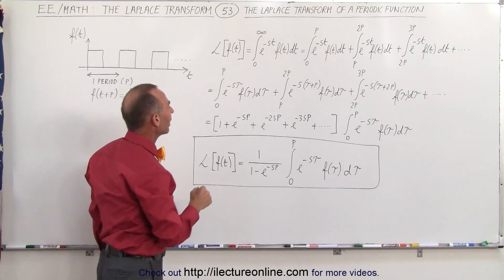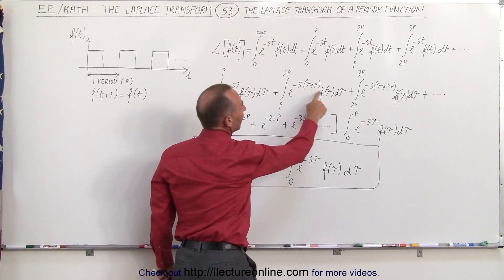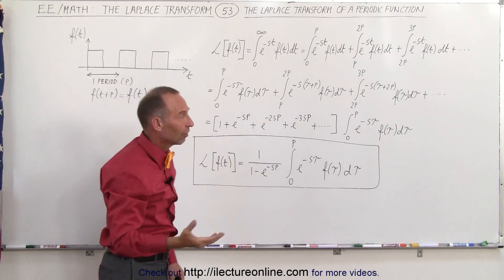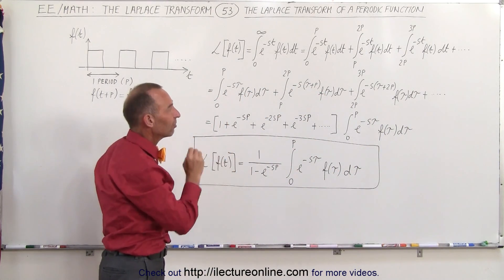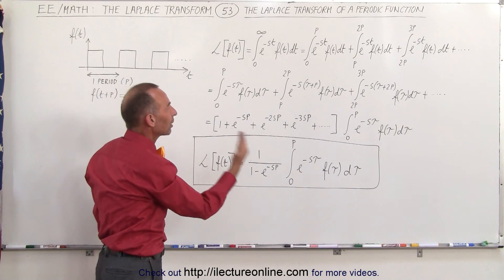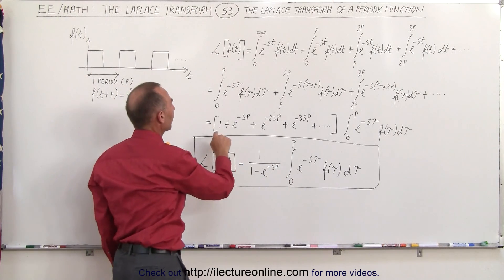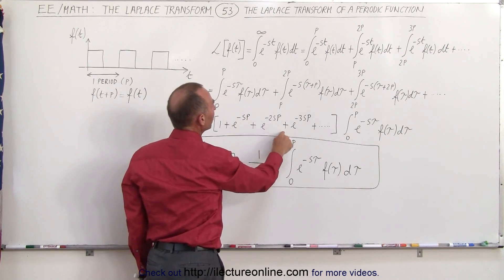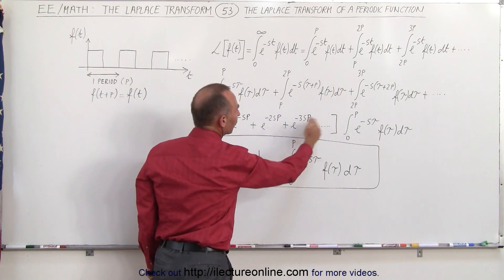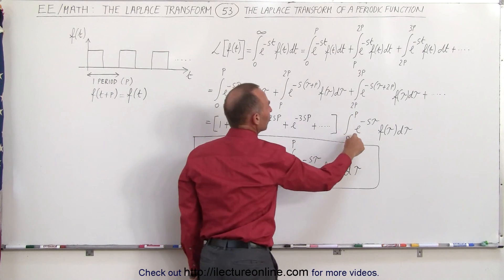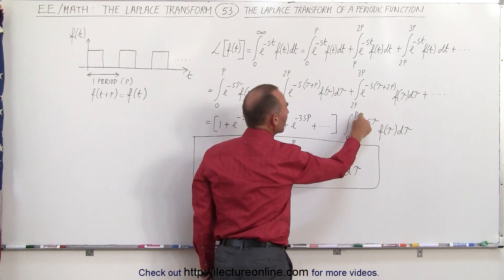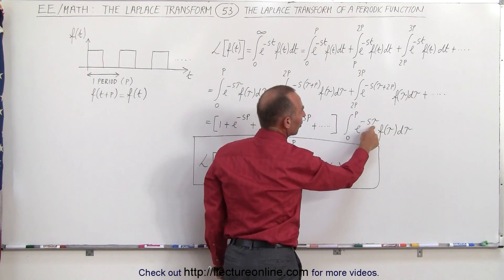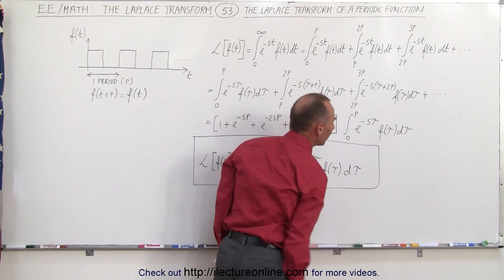And then you realize that s times p and s times 2p and so forth, that's basically a constant. The period is a constant, s is a constant, so we can factor those out, we can bring those out of the integral, and so we can write this as 1 plus e to the minus sp plus e to the minus 2sp plus e to the minus 3sp and so forth forever, times what's left, which is the integral from 0 to p of e to the minus s times tau, which is the dummy variable, the function in respect to tau, dtau.